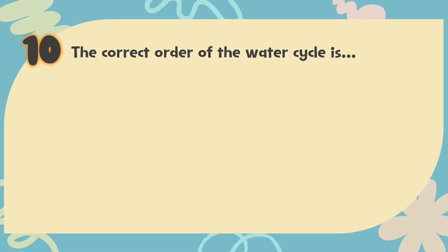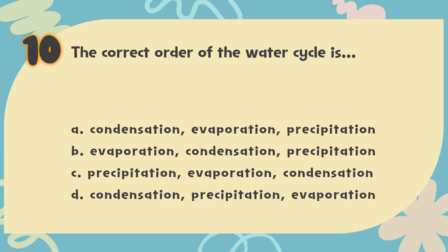Number 10: The correct order of the water cycle is blank. The choices are: A. Condensation, Evaporation, Precipitation; B. Evaporation, Condensation, Precipitation; C. Precipitation, Evaporation, Condensation; D. Condensation, Precipitation, Evaporation.